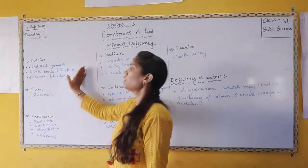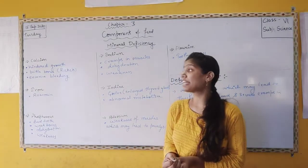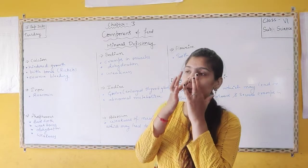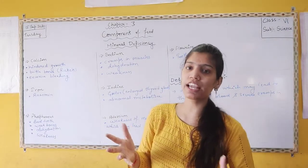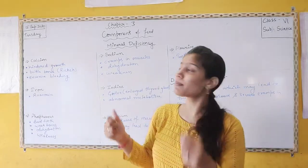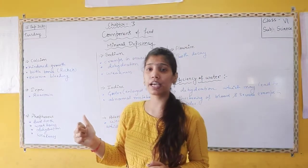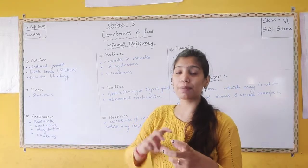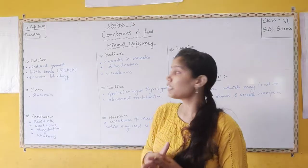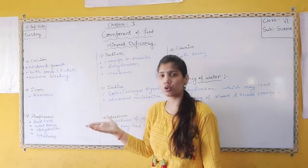First is calcium. You have heard that calcium helps in making bones — bones are made of calcium, so bones can be strong. It also helps with growth: bones will increase, and the number of cells in bones will increase. Calcium also helps growth.